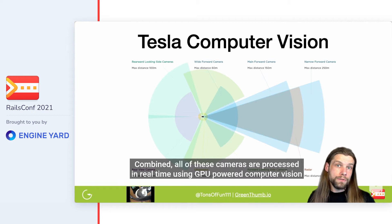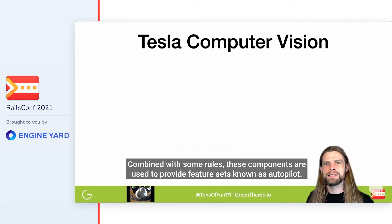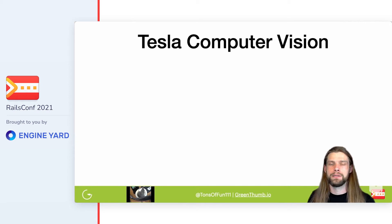Combined, all of these cameras are processed in real-time using GPU-powered computer vision onboard each Tesla to detect lane markers, vehicles, bikes, motorcycles, cones, pedestrians, trash cans, and intersections using neural networks. Combined with some rules, these components are used to provide feature sets known as Autopilot.